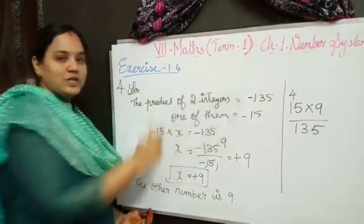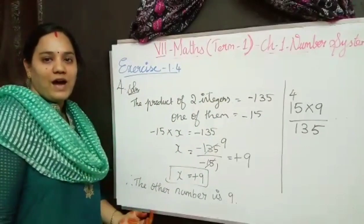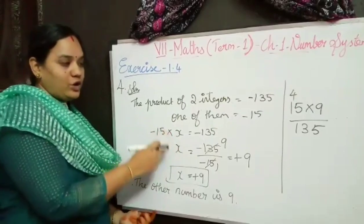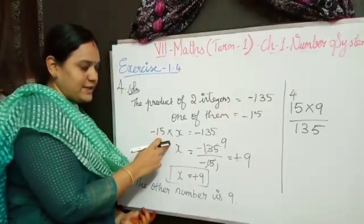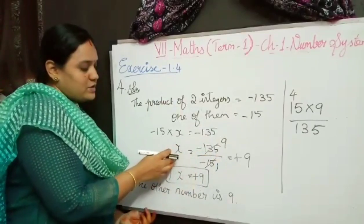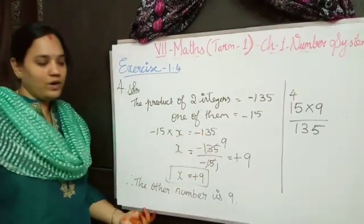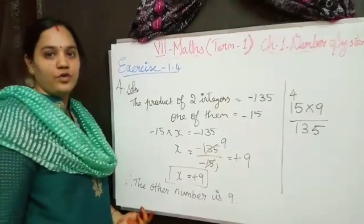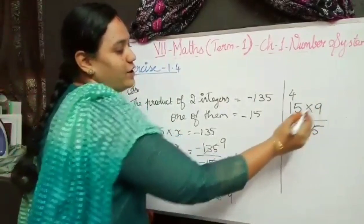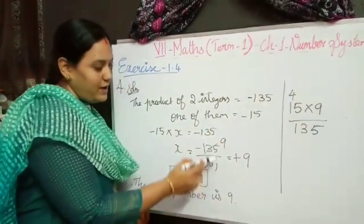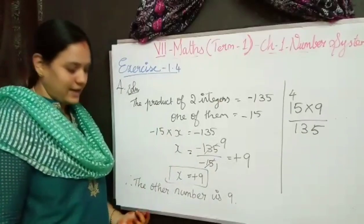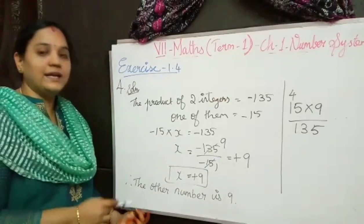Taking minus 15 to the other side, division replaces multiplication. So x equals minus 135 divided by minus 15. Since 15 nines are 135, we cancel to get 9. Same sign so plus. The value of x is plus 9, so the other number is 9.